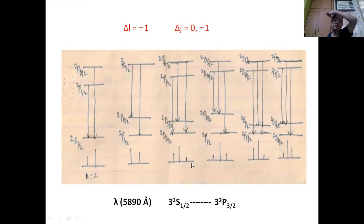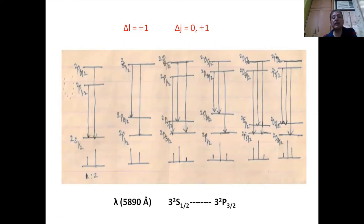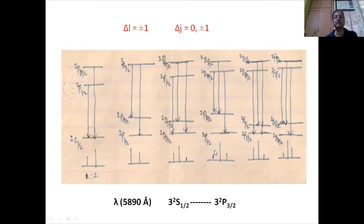When there is more than one line in a doublet, the line involving the largest j value is the strongest. For example, if ²D₃/₂ to ²P₁/₂ has l and j both changing by 1, and another transition also has the same change, then the line with j = 5/2 will be the strongest. In terms of relative intensity, this line is shown as having the strongest intensity.